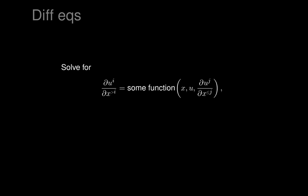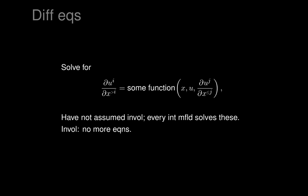There could be additional differential equations because there could be additional equations on integral elements. We've not assumed involutivity — every integral manifold solves these equations. We've only assumed that we have an exterior differential system with a tableau. As long as the system is representable by a tableau locally, it will have differential equations like these satisfied by all its integral manifolds. If the system is involutive, those are precisely the differential equations satisfied by the integral manifolds — involutivity means there are no more equations besides these ones.